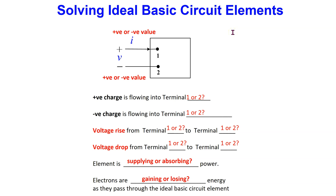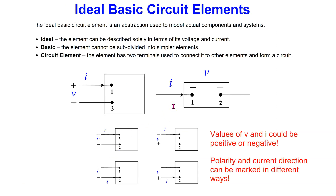Hello everyone. In this video we will look at how to completely solve an ideal basic circuit element. This involves determining the direction of positive and negative charge, the voltage rise and drop between the terminals, whether the circuit element is supplying or absorbing power, and whether the electrons gain or lose energy as they pass through the ideal basic circuit element. The theory behind this is discussed in other videos in this channel, with links provided at the end.